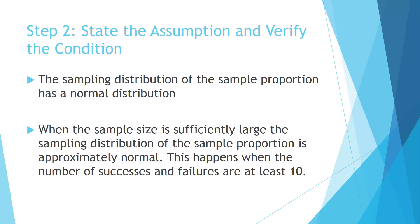Now we should state the assumption and verify the condition. We're doing a confidence interval for a single population proportion using the z distribution, so the assumption is that the sampling distribution of the sample proportion has a normal distribution — in other words, it follows the normal curve. This happens when the sample size is sufficiently large. Specifically, this occurs when the number of successes and the number of failures are both at least 10. We'll talk about verifying this condition more later on in class.